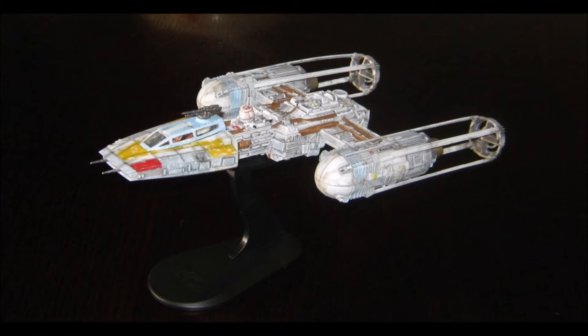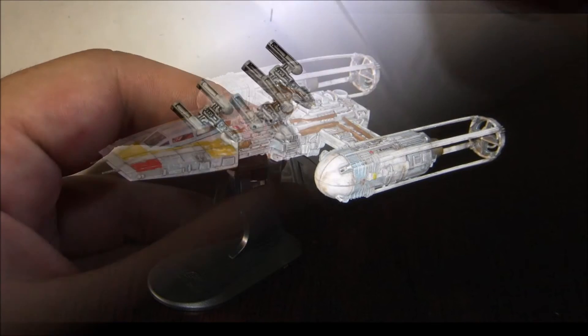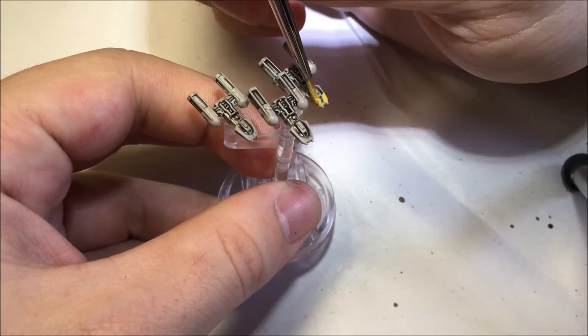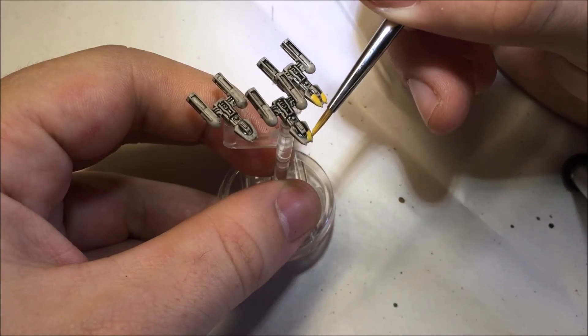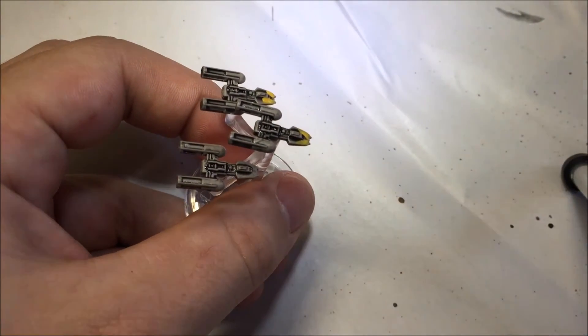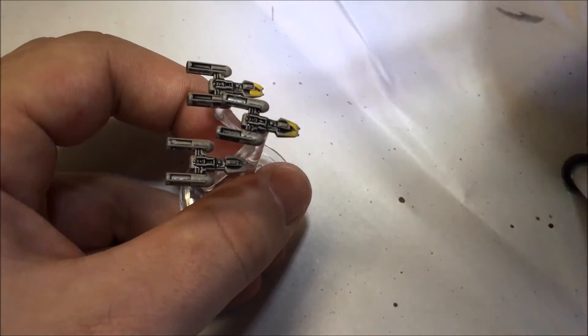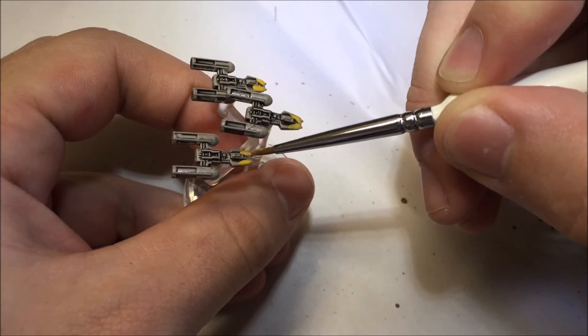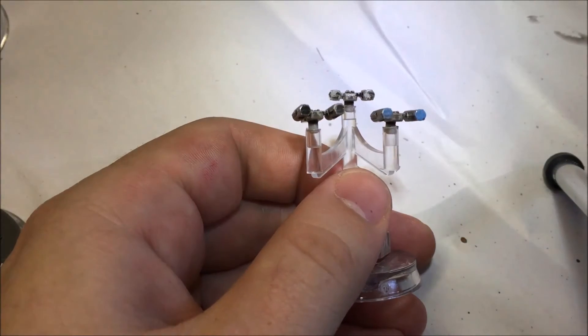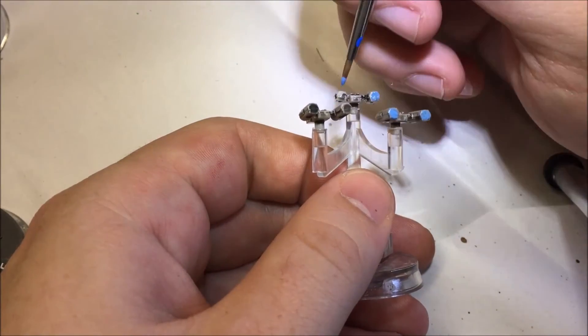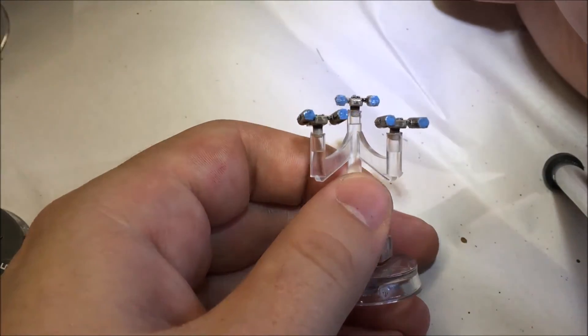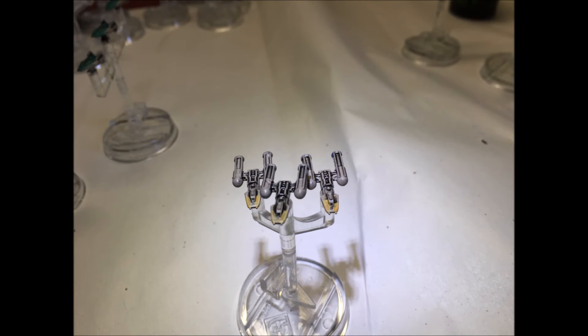Now onto Y-Wings. Apply yellow to the front of the Y-Wing's cockpit on the upper side. Apply blue to the engine exhausts. There we have it, a completed Y-Wing.